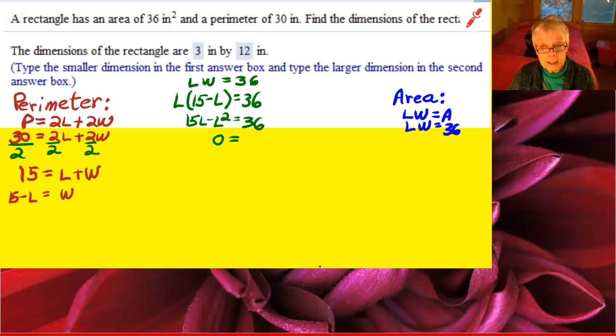Using the zero principle, that gives me 0 equals L squared minus 15L plus 36.